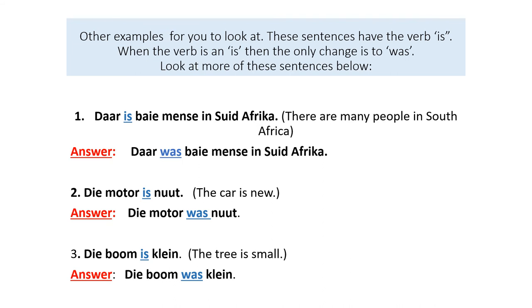Number one: Dar es baie mense in South Africa. There are many people in South Africa. The answer: Dar was baie mense in South Africa. Number two: Die moeder es nieu. The cake is new. The answer: Die moeder was nieu. Number three: Die boom es klein. The tree is small. The answer: Die boom was klein.